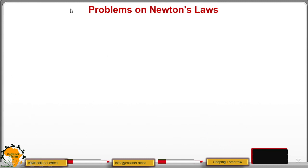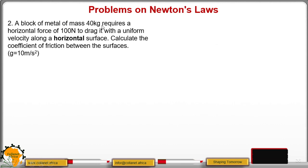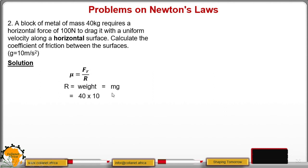Then number 2: a block of metal of mass 40 kg requires a horizontal force of 100 newtons to drag it with a uniform velocity along a horizontal surface. Calculate the coefficient of friction between the surfaces. We proceed as follows. Mu is equal to F over R. Therefore, we need to get the value of R. R is given as weight, which is mg. So M is 40, g is 10, giving 400 newtons. Then mu equals the force divided by the reaction, so the coefficient of friction is 0.25. Remember, this has no unit because it is a ratio of forces — the newtons cancel out.